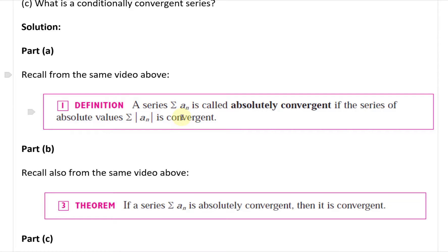A series, the summation of aₙ, is called absolutely convergent if the series of absolute values, which is the summation of |aₙ|—all the terms take the absolute value—is convergent.